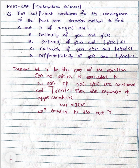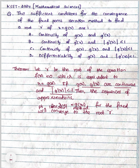and g of x and g dash of x are continuous with mod of g dash less than 1, then the sequence of approximations x_{n+1} equal to g of x_n for the fixed point iteration method will converge to the root r. So according to this theorem, we need continuity of g and g dash, and mod of g dash less than 1. These conditions are satisfied in option C. Therefore, the correct option is option C.